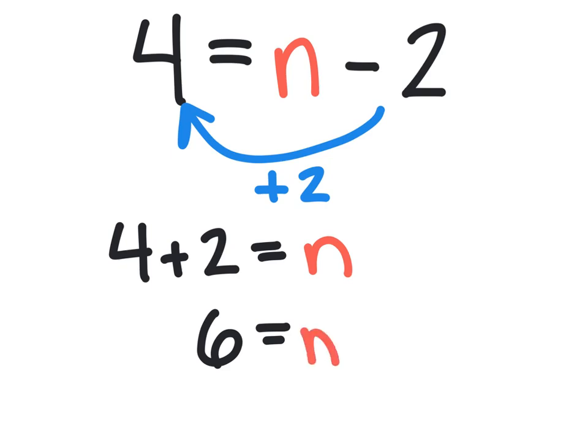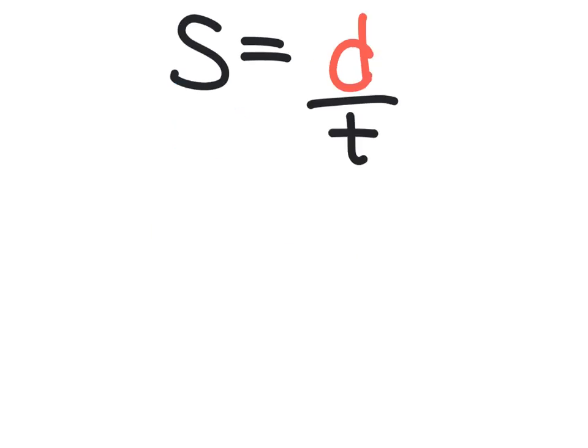Once we've found our variable, I want you to put a box around it. In the second example, we're looking at s equals d over t, where those variables represent speed equals distance over time. And of course, we're looking for distance as it's in red.